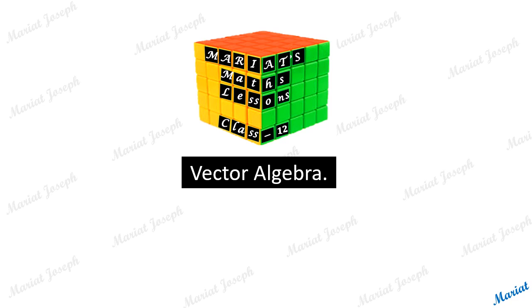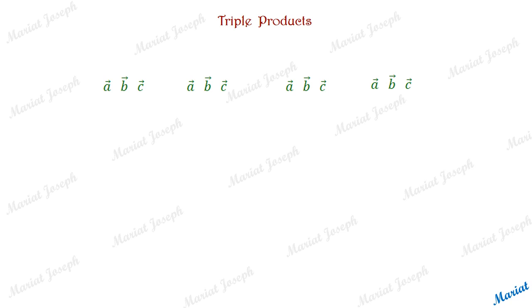Welcome to Vector Algebra. We will be looking at triple products involving three vectors. Let's see the various possibilities. As we know, between two vectors there are two types of products: one is the cross product, and one is the dot product.